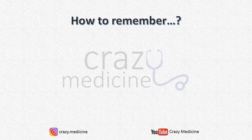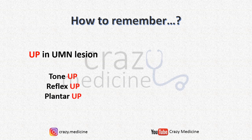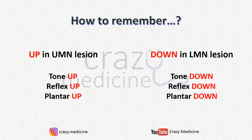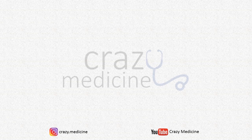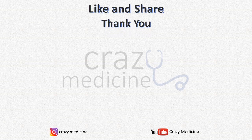If you understood it conceptually, no mnemonic is needed, but for completion just note: remember 'up' for UMN lesion — tone up, reflex up, and plantar up — whereas in LMN lesion remember 'down' — tone down, reflex down, and plantar down. That was all about the basic concept of UMN and LMN lesions. Do watch our other videos on neurology, and do like and share our videos as much as possible. Thank you.